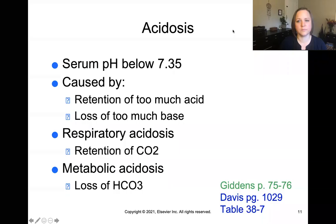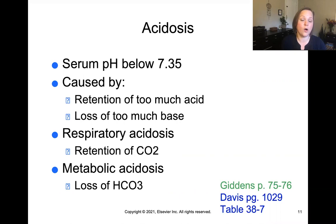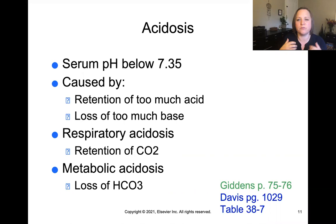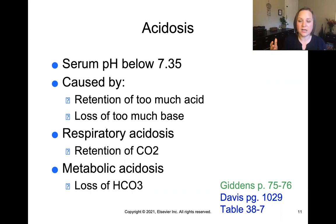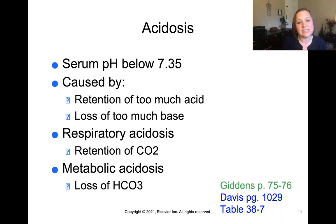Acidosis occurs when the blood pH falls below 7.35. It's caused by either too much acid being retained or too much base being released — a teeter-totter effect. We can have respiratory acidosis where we retain carbon dioxide, not blowing off enough CO2, increasing our acid. Or metabolic acidosis where we're getting rid of too much bicarbonate — since bicarb is a base, losing it means we have too much acid by default.